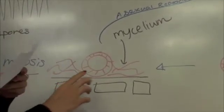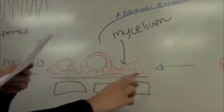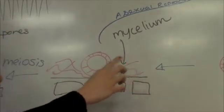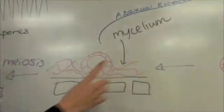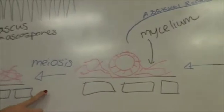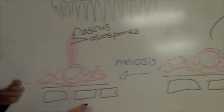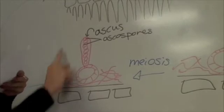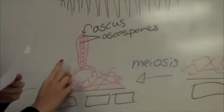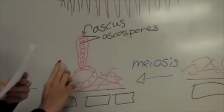The cleistothecium then forms mycelium around it, and it can undergo asexual reproduction or undergo meiosis to form ascal spores, which are within an ascus. These are the sexual spores.